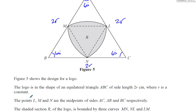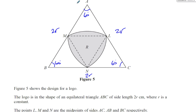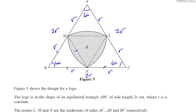R is a constant. The points L, M, and N are midpoints of the sides AC, AB, and BC. So from A to L is R, L to C is R, N to C is R, B to N is R, B to M is R, and A to M is R. Since all angles are 60 degrees and the two sides are equal, these must all be equilateral triangles of side R.